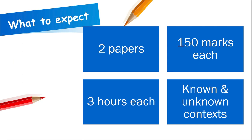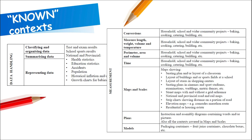You'll be writing two papers — 150 marks each, and each paper will be three hours long. There will be known and unknown contexts in both papers. Examples of known contexts can be found in your exam guideline, the 2021 version. I've copied some of these into this presentation so you can familiarize yourself with the types of questions considered known contexts.